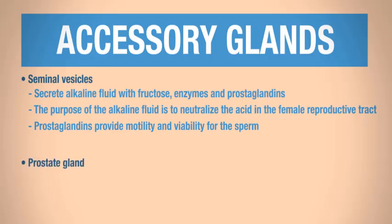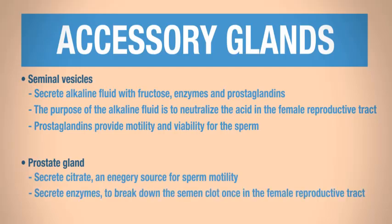The prostate gland is another accessory gland. The prostate gland secretes citrate, which is an energy source for sperm motility and enzymes that will break down the semen clot once it is in the female reproductive tract. So take a second to make sure you understand. The semen clots during ejaculation and is then broken down once it's inside the female reproductive tract.